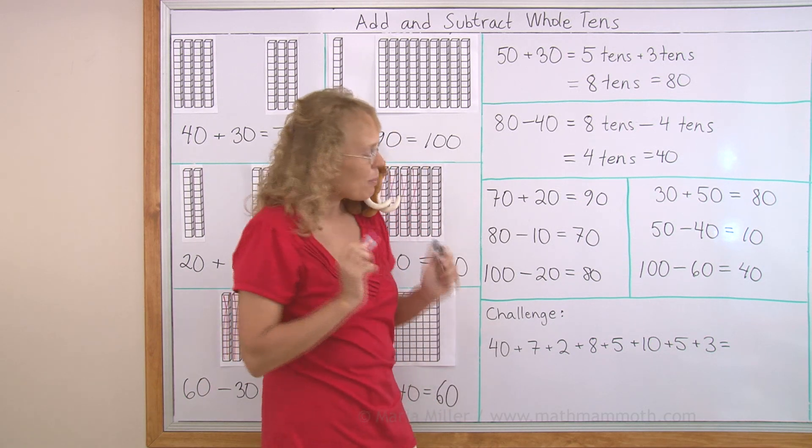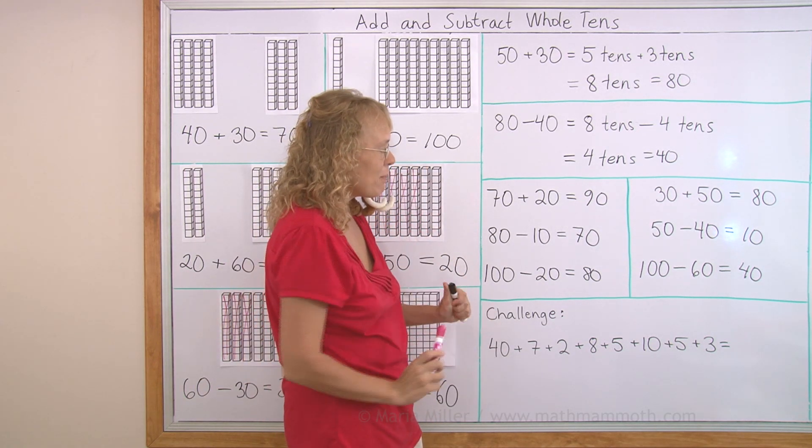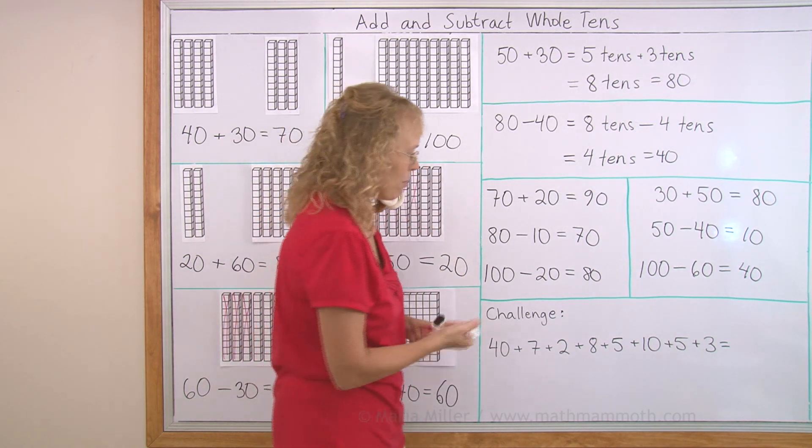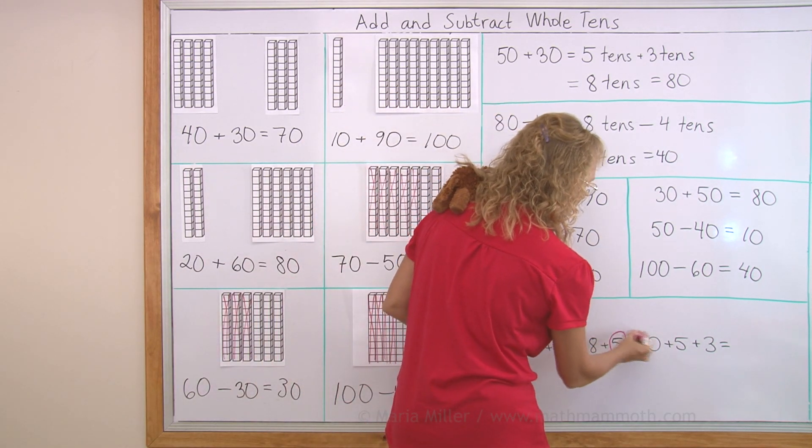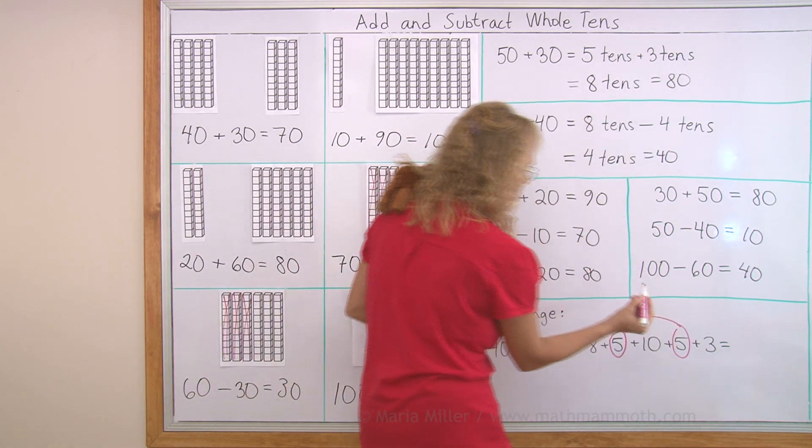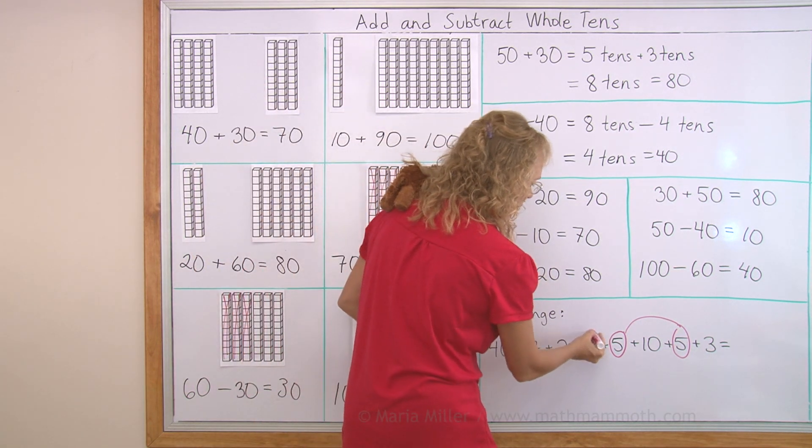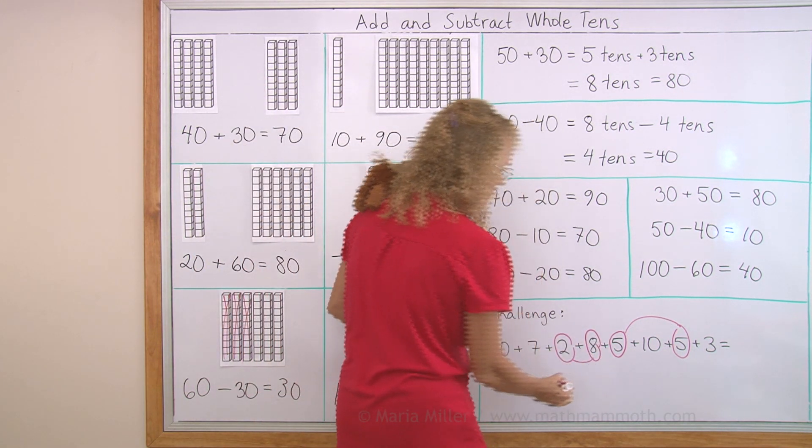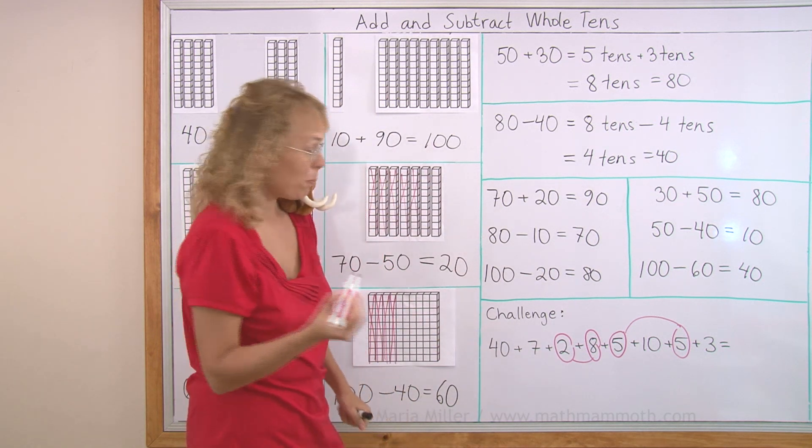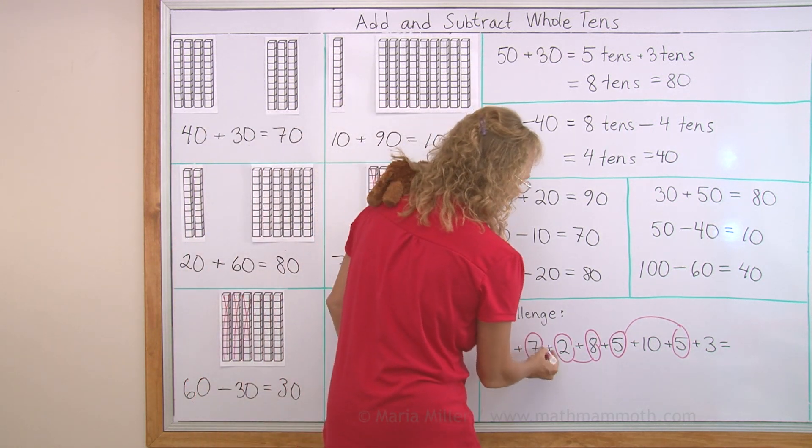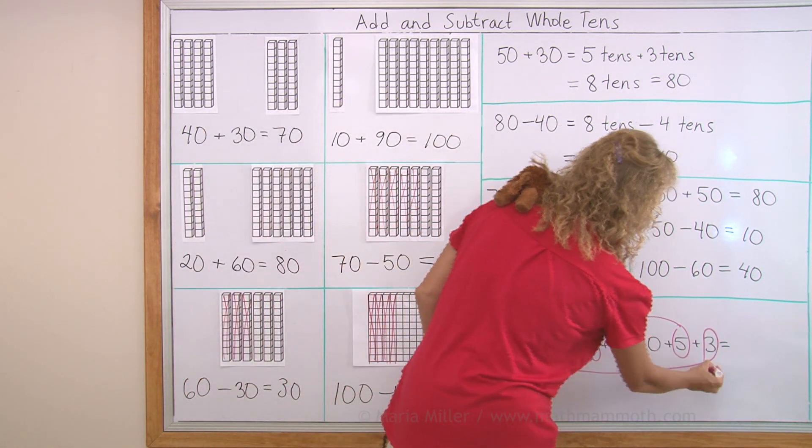Okay. The trick is that some of those numbers, when we add them, make ten. For example five and five here. I can pair them. I can add them. They make ten. Then here, eight and two. And one more such pair. Seven here and three here. Those make ten.